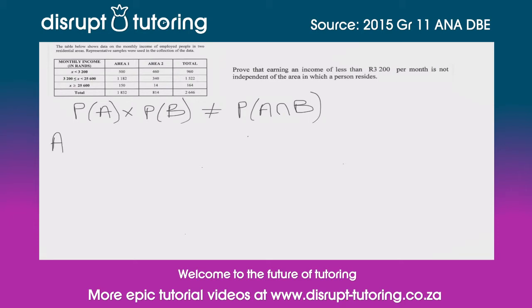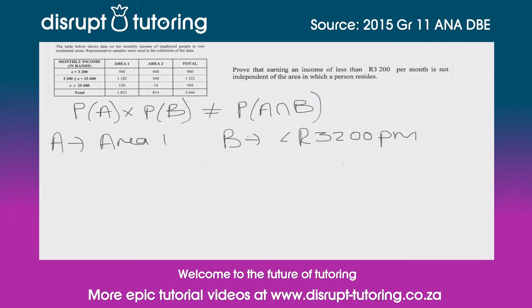In order to do that, let's say that event A is going to be that someone lives in Area 1, and event B is that someone earns less than 3200 rand per month. So let's start off on the left-hand side: the probability of A times the probability of B.